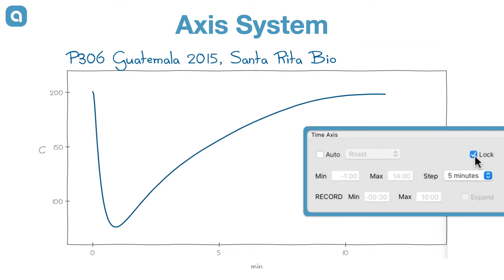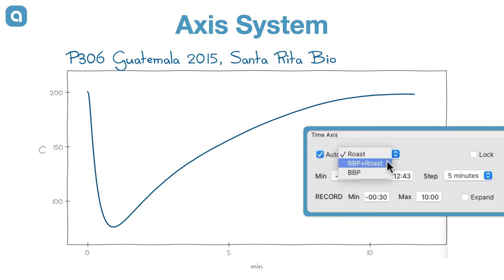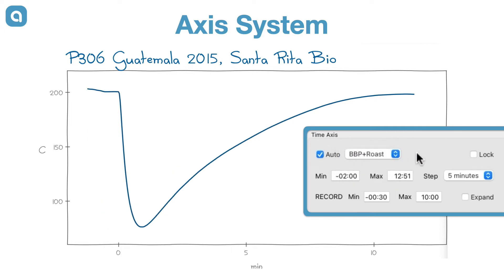In most other situations the automatic time axis mode is best. If the auto flag is ticked, Artisan selects reasonable limits based on the loaded profile data. It is either focusing just on the roast, on the roast including the between-batch protocol, or just the between-batch protocol.